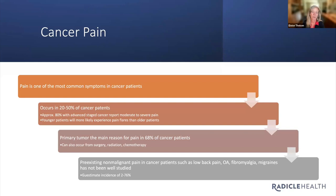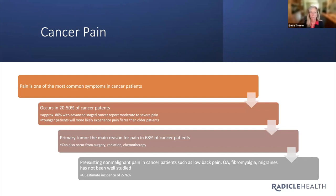As you know, palliative care patients are often cancer patients and they have a lot of pain. Malignant pain is probably one of the hardest pains to treat, and many of these patients can end up on high levels of opioids, which come with their own set of concerns and side effects. About 20 to 50% of cancer patients will experience pain, and approximately 80% with advanced stage cancer will have moderate to severe pain.